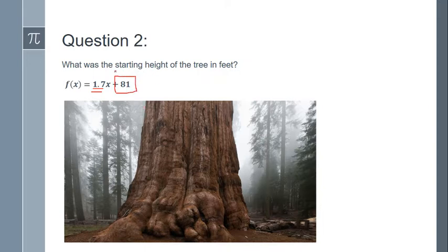Or it's our starting height in this case. So when x is 0, that means that year is 0. That means when I first measured the tree, the tree was 81 feet. That's the initial or starting height of the tree.